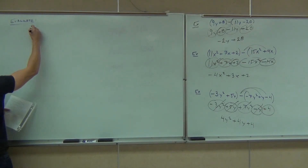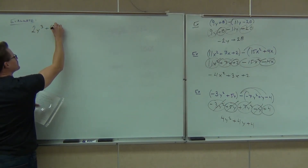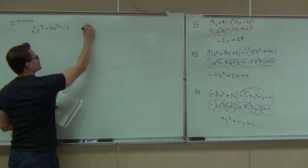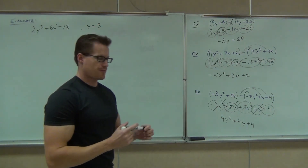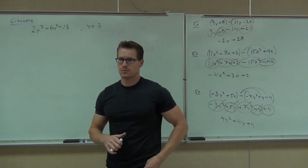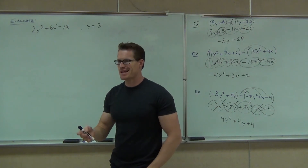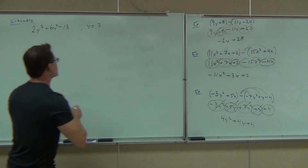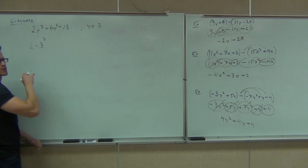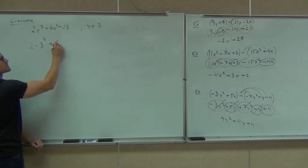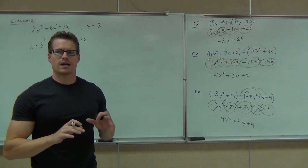So if I say evaluate this expression, could we figure that out? What's our first step? Without doing any math in our head, we're supposed to plug in that 3. Doing math in your head messes us up when we're dealing with exponents and large numbers. So plugging in the 3 — substituting it in — should give us 2 times 3 cubed plus 6 times 3 squared minus 13, because our y's are 3.